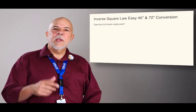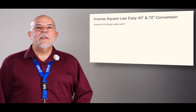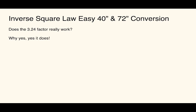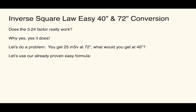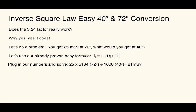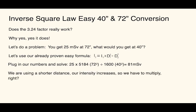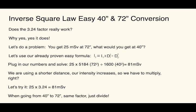So does this really work? Let's take a look and see if it actually works. So pretty simple word problem. You have 25 millisieverts at 72 inches. So what would you get at 40 inches? So we've already used our proven formula. It's pretty quick and straightforward. That ends up with 81 millisieverts. Using our shorter distance, intensity increases, so you have to multiply. Makes it pretty easy. So we just take our 25 times 3.24. We come up with the answer, 81 millisieverts. When going from 40 to 72 inches, you use the same factor. You just divide rather than multiply. It's like magic, right?